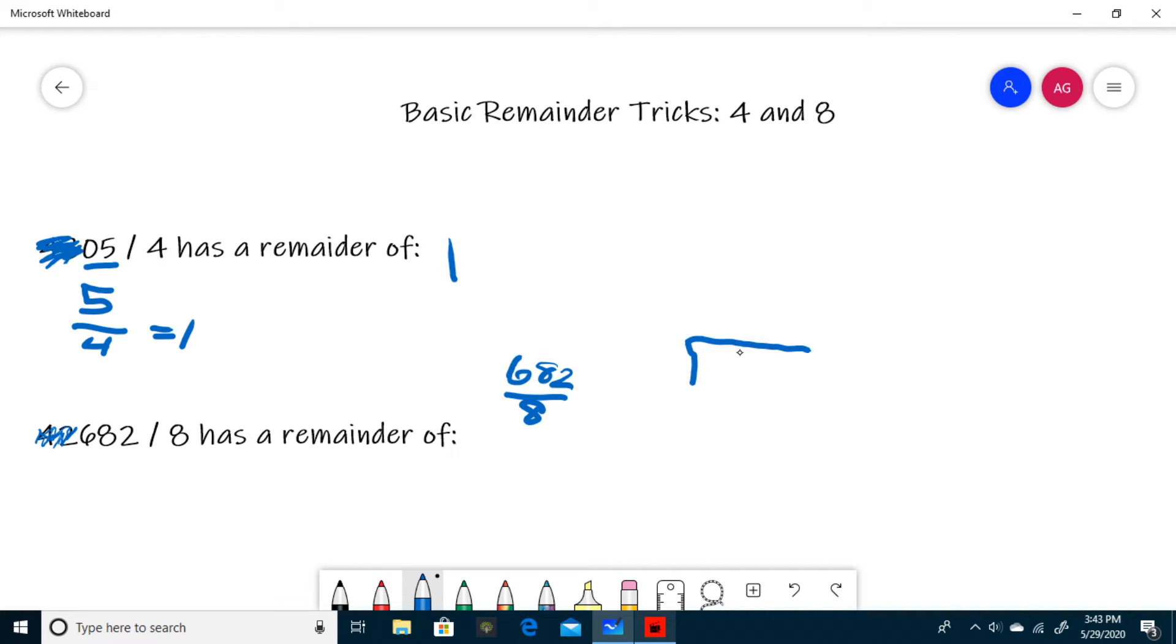So 682 divided by 8. 8 goes into 68 eight times, with a remainder of 4.